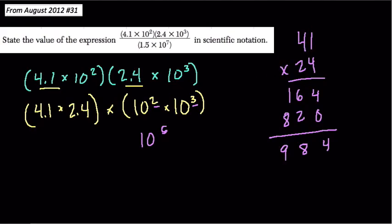Here though, we didn't multiply 41 by 24. It's 4.1 times 2.4, numbers that are both 10 times smaller. That tells me that altogether, my product shouldn't be 984, it should be 100 times smaller because both numbers are 10 times smaller. It's 9.84. So our numerator is 9.84 times 10 to the fifth, and that's over 1.5 times 10 to the seventh.